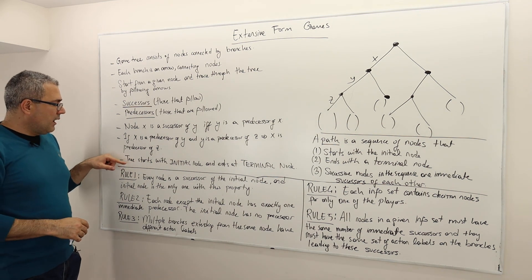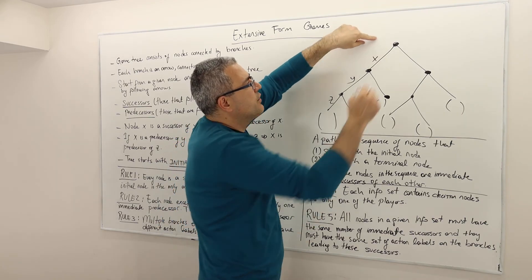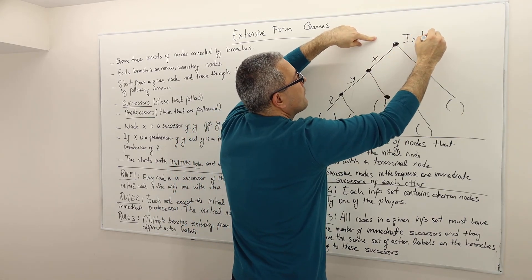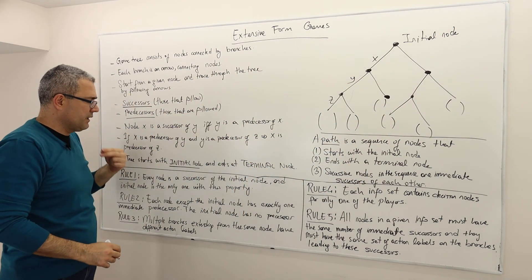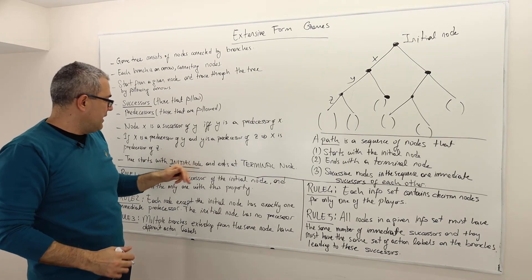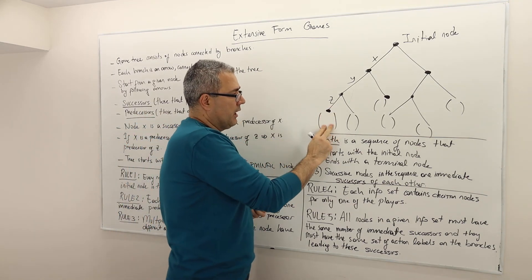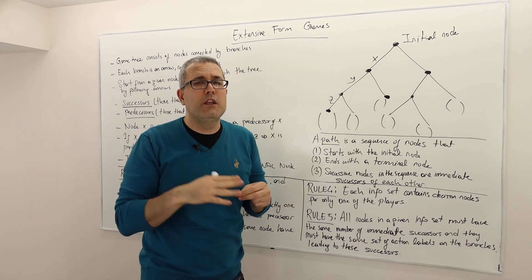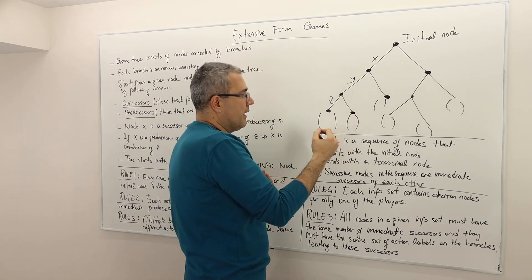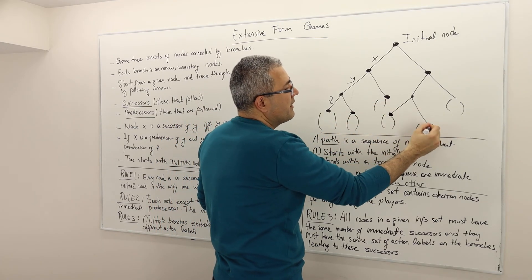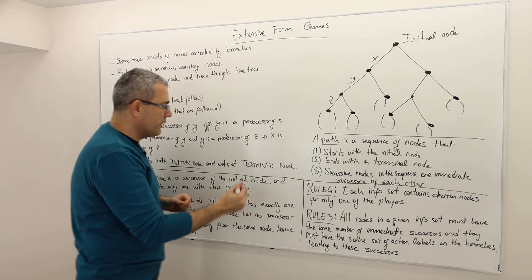A game tree starts with what we call the initial node — this represents the beginning of the game or the first player that moves. Each game tree ends at some terminal nodes. A terminal node is where we represent the payoffs; there is no more strategic interaction after this point. It's the end of the game. In this example we have six terminal nodes. Each game tree starts with just one initial node, and there will be more than one terminal node.